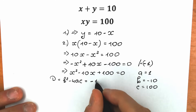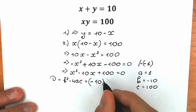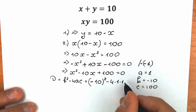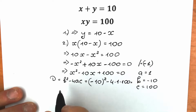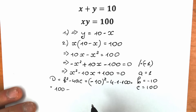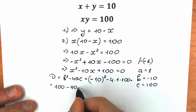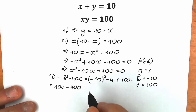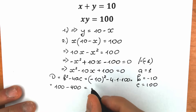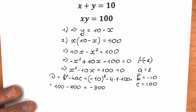So we compute: (minus 10) squared minus 4 times 1 times 100. That gives 100 minus 400, which equals minus 300. Our discriminant is negative.